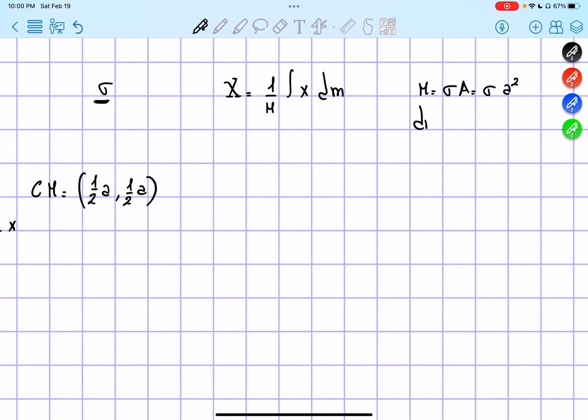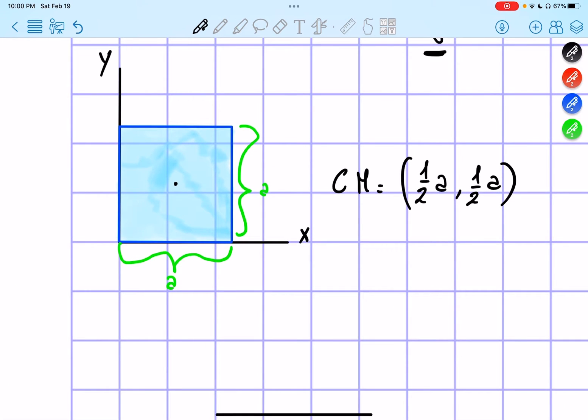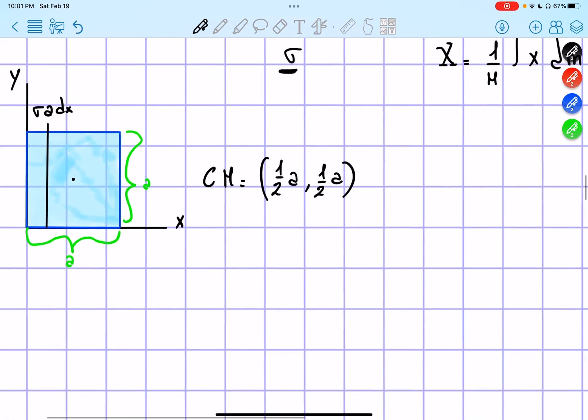So now dm instead, what is that? Well, dm is actually going to be equals to a slit of this point. So, for example, if I were to find the mass contained in this slit, this slit has surface density omega, height a, and width dx. So that's our dm.